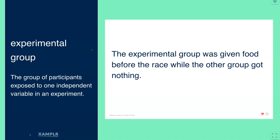The experimental group was given food before the race while the other group got nothing. So the control group got nothing, the experimental group was given food, and the results of the race were measured — the difference between the two groups.